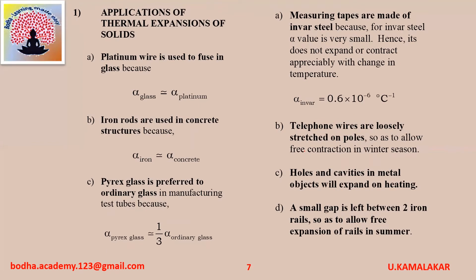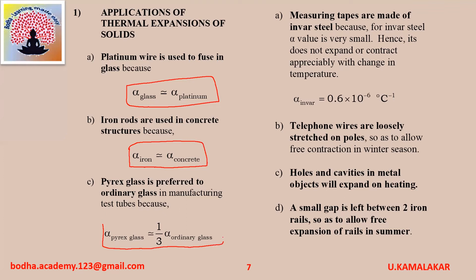Applications of thermal expansion of solids: platinum wire is used to fuse in glass because alpha of glass is approximately equal to alpha of platinum. Iron rods are used in concrete structures because alpha of iron is approximately equal to alpha of concrete. Pyrex glass is preferred to ordinary glass in manufacturing test tubes because alpha of Pyrex glass is approximately equal to one-third of alpha of ordinary glass. Measuring tapes are made of Invar steel because Invar steel has very low alpha value (0.6 × 10⁻⁶ per °C), so it does not expand or contract appreciably with temperature change. Telephone wires are loosely stretched on poles to allow free contraction in winter. Holes and cavities in metal objects will expand on heating. A small gap is left between two iron rails to allow free expansion in summer.